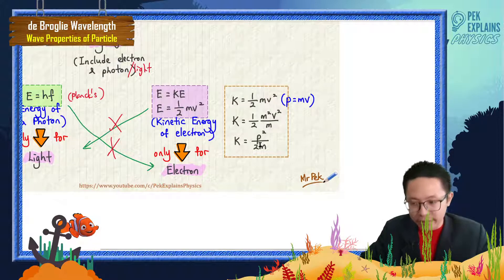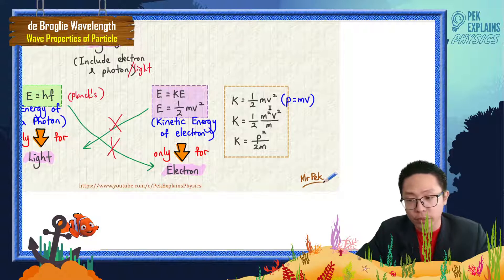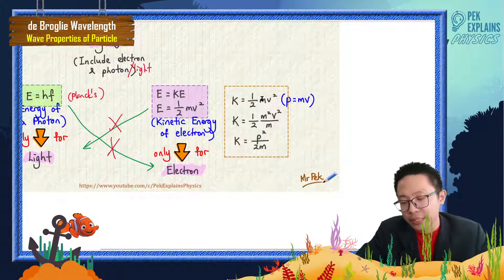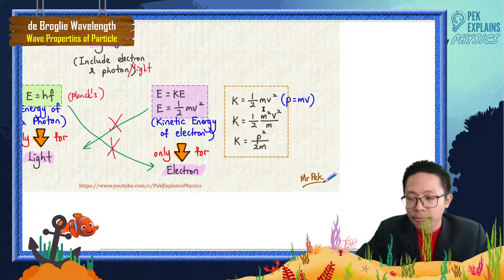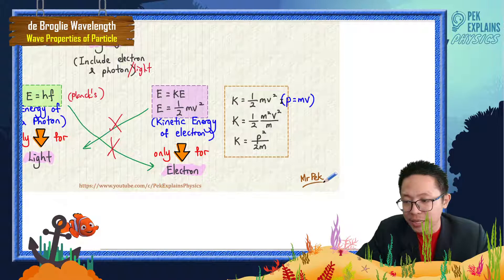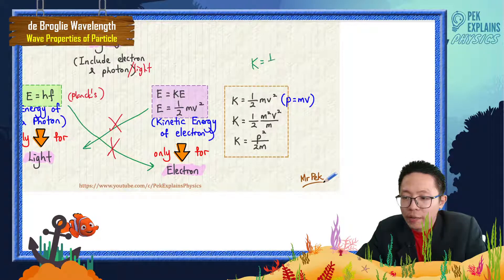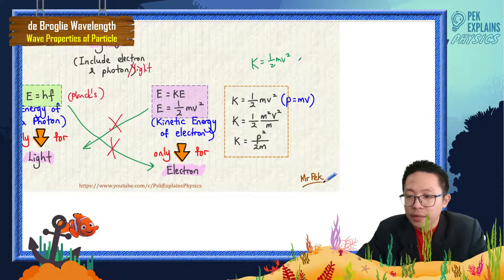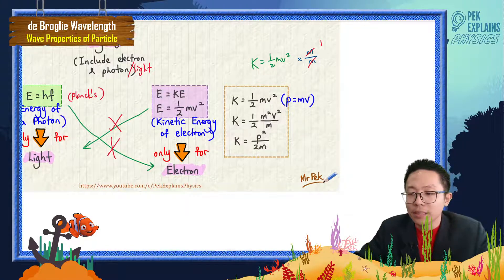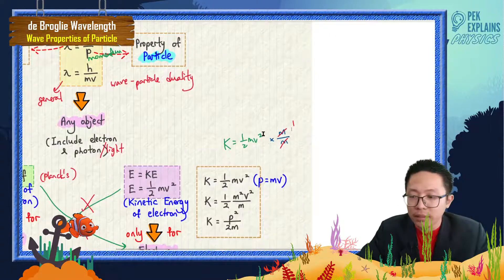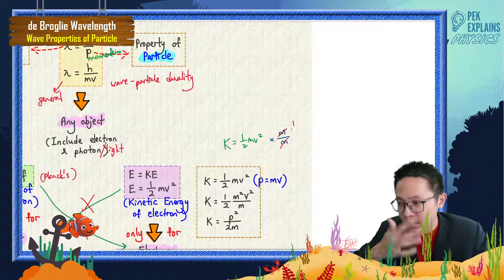Now, kinetic energy can be related to momentum. Kinetic energy K = ½mv², and momentum p = mv. To put momentum inside the kinetic energy formula, I multiply by m/m — which equals one, so it has no effect on the equation.